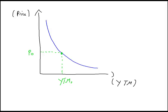In order to visualize duration in this price-yield diagram, we know that duration — or modified duration — is the change in the bond price, divided by the bond price, divided by the change in the yield to maturity.